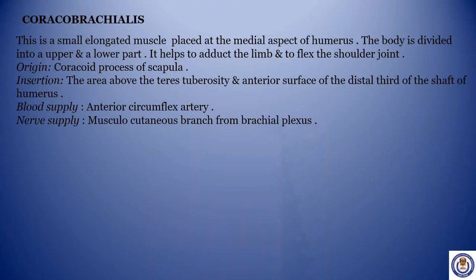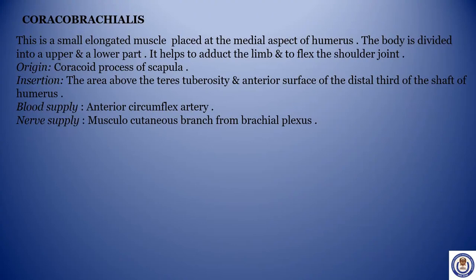Coracobrachialis: this is a small elongated muscle placed at the medial aspect of the humerus. The body is divided into an upper and a lower part. It helps to adduct the limb and to flex the shoulder joint. Origin: coracoid process of scapula. Insertion: the area above the teres tuberosity and anterior surface of the distal third of the shaft of humerus. Blood supply: anterior circumflex artery. Nerve supply: musculocutaneous branch from brachial plexus.